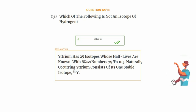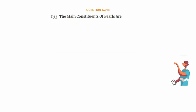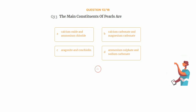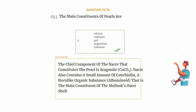Question number thirteen: the main constituents of pearls are — option A: calcium oxide and ammonium chloride, option B: calcium carbonate and magnesium carbonate, option C: aragonite and conchiolin, option D: ammonium sulfate and sodium carbonate. The correct answer is option B: calcium carbonate and magnesium carbonate. The chief component of the nacre that constitutes the pearl is aragonite (CaCO₃). Nacre also contains a small amount of conchiolin, a horn-like organic substance that is the main constituent of the mollusk's outer shell.